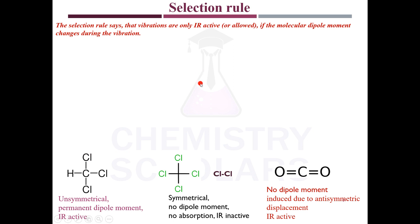Not all molecules will give you an IR spectrum. The molecules which result in a dipole moment change during vibration are IR active. According to the selection rule, vibrations are only IR active — they will absorb IR radiations — if the molecular dipole moment changes during the vibration. After absorbing IR radiation, the vibrations take place, and if the vibrations cause any change in dipole moment, we say they are IR active.